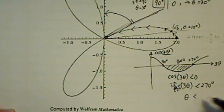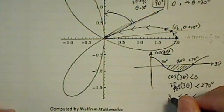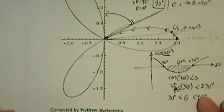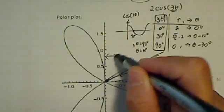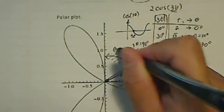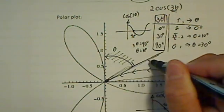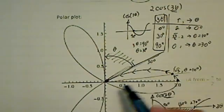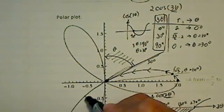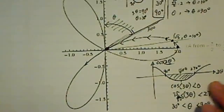Which equivalently, theta is between 30 degrees to 90 degrees. Okay, so that's the section I just outlined over here in gray. In this section, when theta is between 30 to 90 degrees, the r value is negative. That's why the curve is actually flipped.